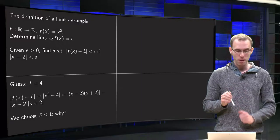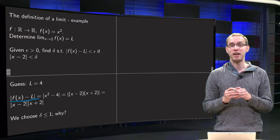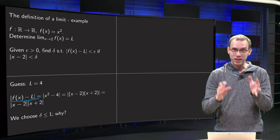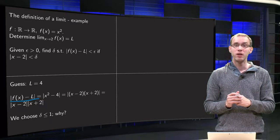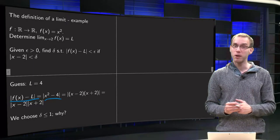And then we have to estimate, as always, we have to get that value small. Well, we know f(x) is x squared, L is 4...